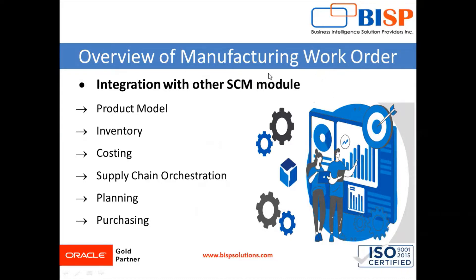What is a manufacturing work order? A manufacturing work order is a document, or we can say a group of documents or a schedule conveying authority for the manufacture of specified parts or products in specified quantities. The manufacturing work order provides what you are making, where you are making it, captures all the cost, where the material is coming from, where the finished goods are going, and what is driving the demand for the item.